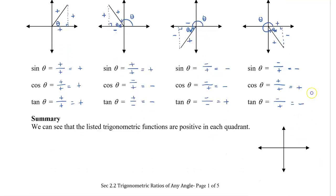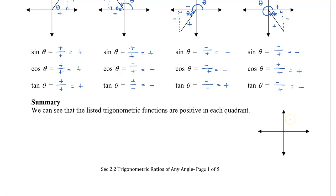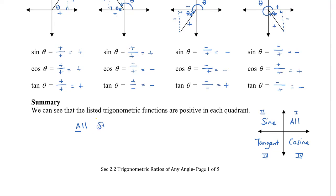Summarizing: in the first quadrant, all three — sine, cosine, and tan — are positive. In the second quadrant, only sine is positive. In the third quadrant, only tangent is positive. And in the fourth quadrant, only cosine is positive. A little mnemonic device to help you: All Students Take Calculus — going from quadrant 1, 2, 3, and 4.